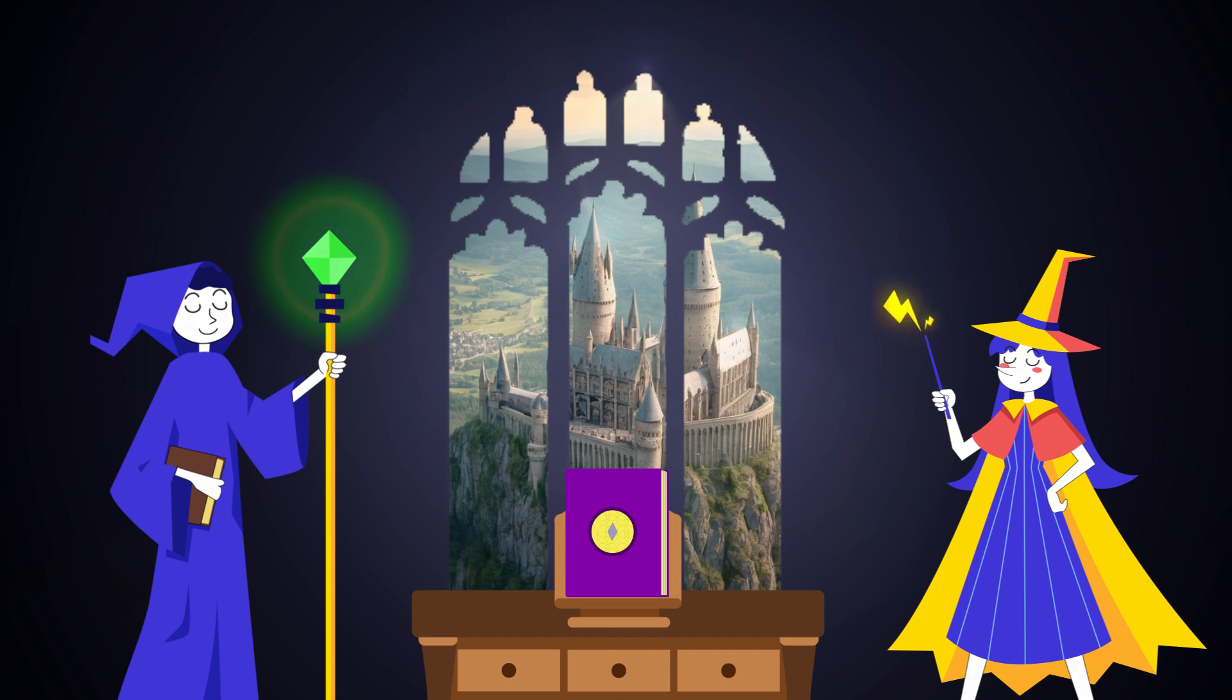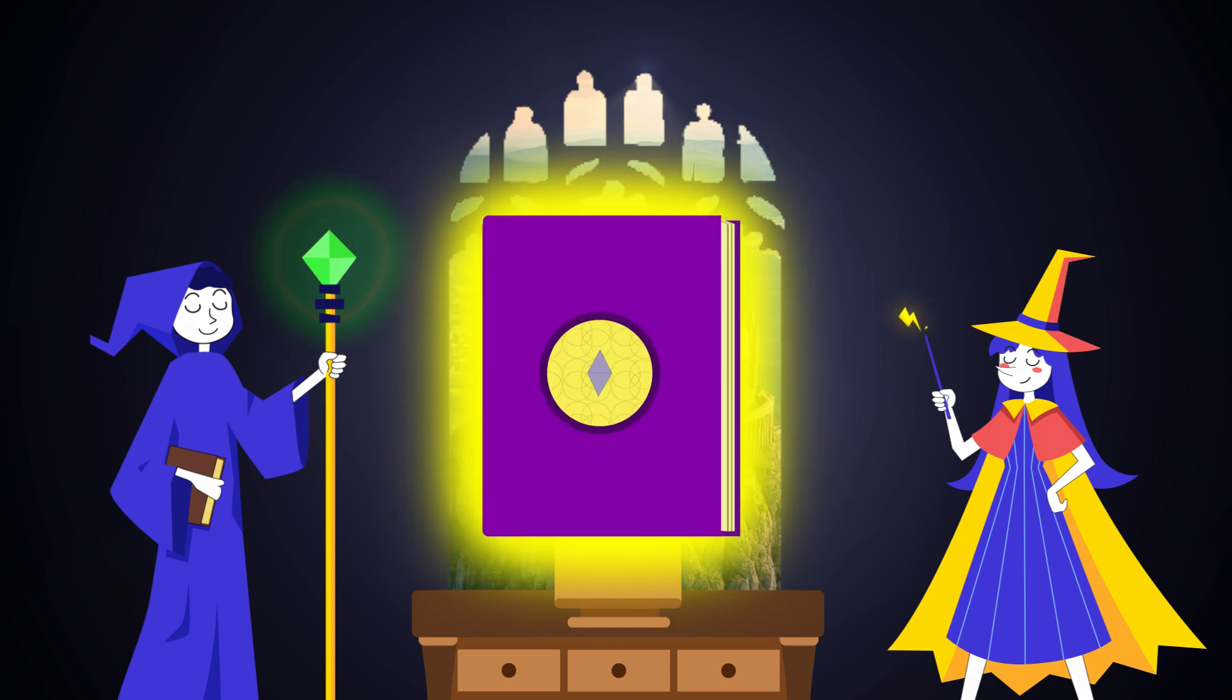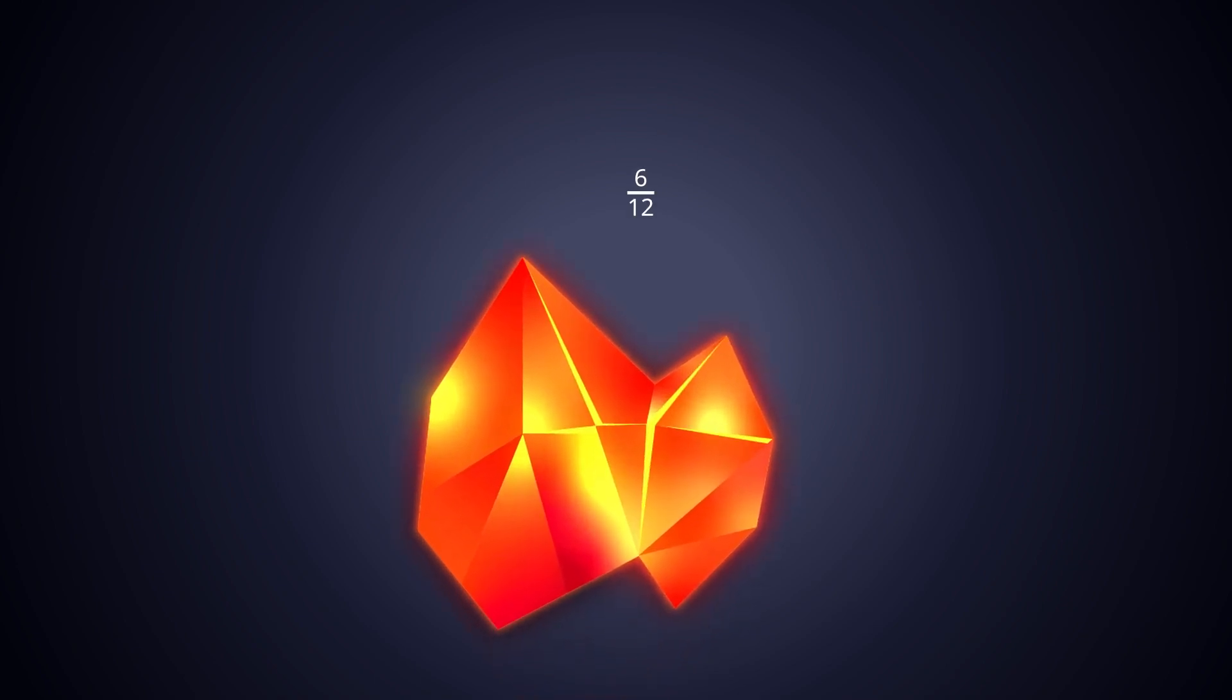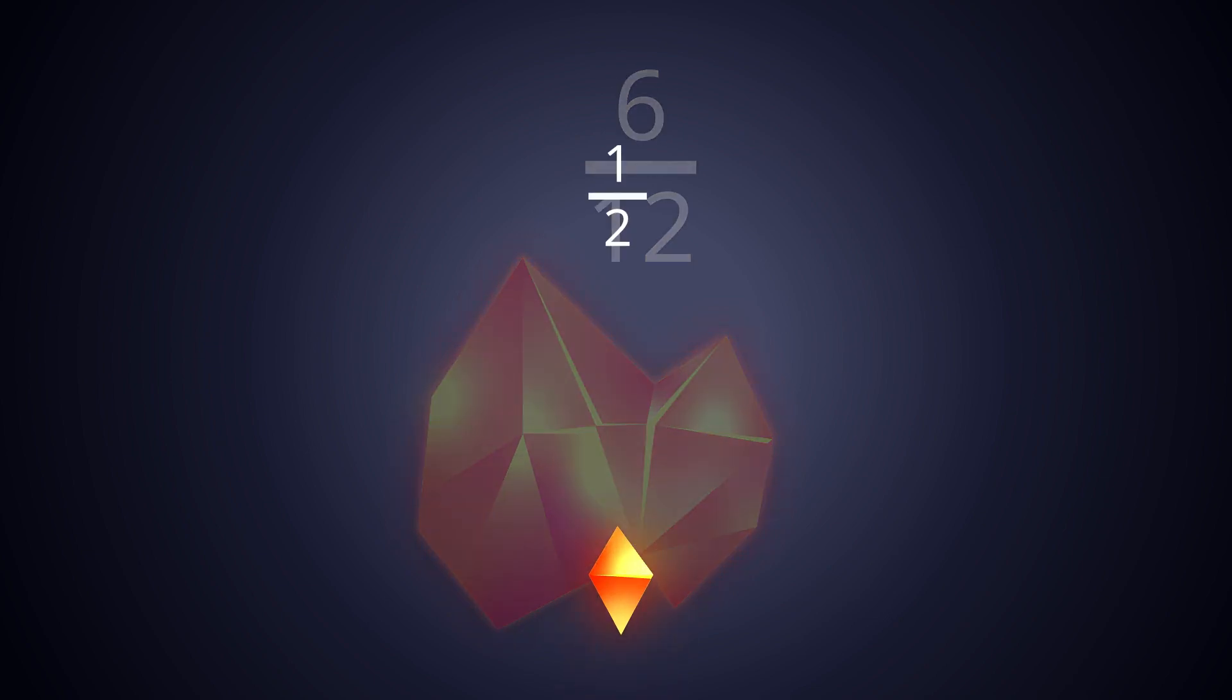Your mission is to simplify fractions and unlock the secrets of an ancient spell book. Fractions are magical objects. Some are big and bulky, like 6/12, and some are small and simple, like 1/2. Your goal is to transform the bulky objects into simple forms using magical math skills.